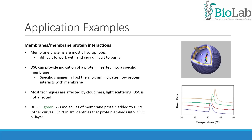DSC can also give information on membranes and membrane-protein interactions. As you might know, membrane proteins are mostly hydrophobic and are difficult to work with and very difficult to purify. DSC can provide indication of a protein inserted into a specific membrane. Specific changes in the lipid thermogram indicate how proteins interact with the membrane. Most techniques are affected by cloudiness such as light scattering, but DSC is not affected.